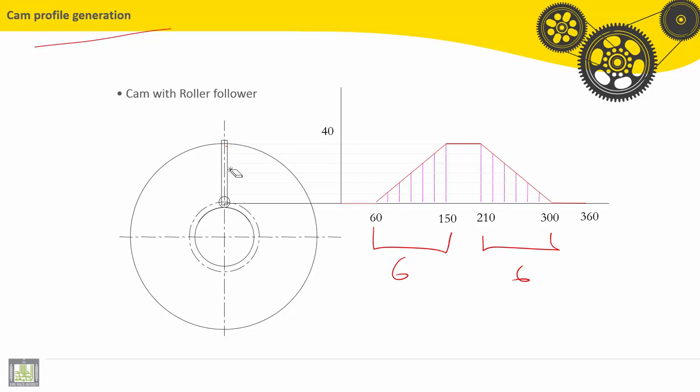Next step, we have to divide this circle according to these intervals. So here we have 15 degrees, 30, 45, 60, 75 degrees.